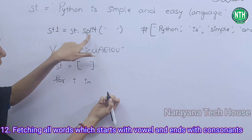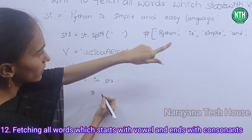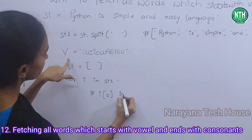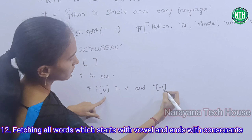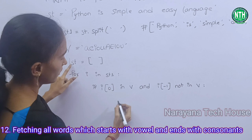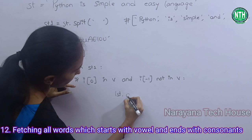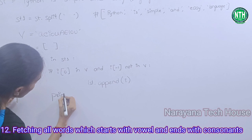lst = [] (empty list). For i in st1 — after splitting, write st1. Condition: if i[0] in V (starts with vowel) and i[-1] not in V (ends with consonant), then append — lst.append(i). Then print lst.